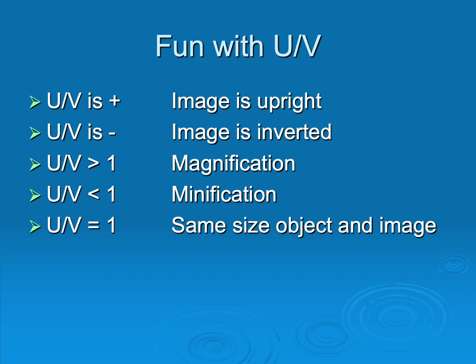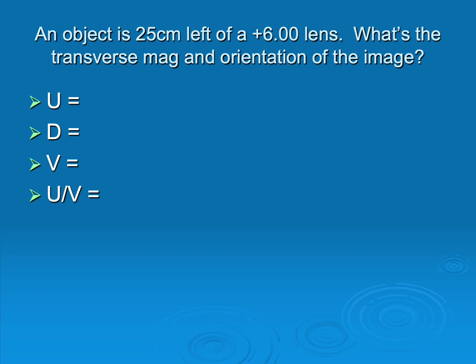There's more that U over V can do for you. If it's positive, the image formed is upright. Where the sign matters is whether the image is right side up or upside down. For an object 25 centimeters left of a plus 6, working through the formula gives minus 2. A negative U over V gives us an upside-down, or inverted, image.